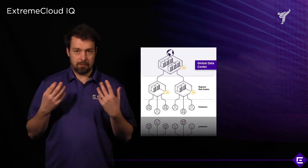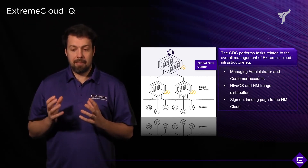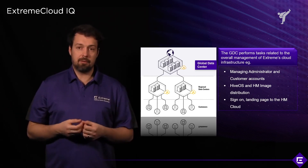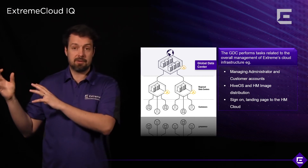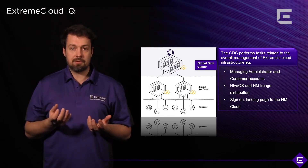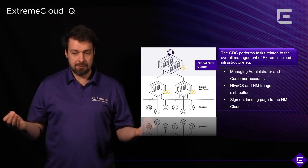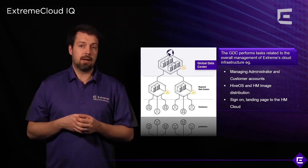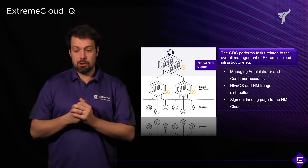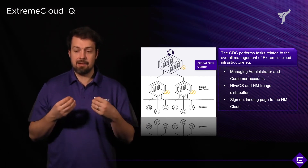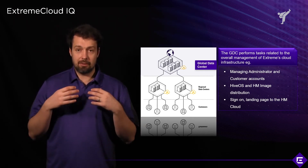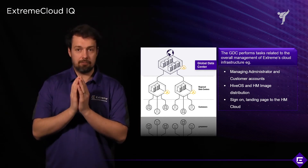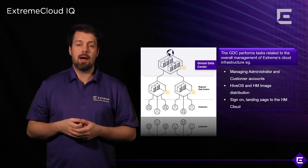So what's the role of the Global Data Center? It performs tasks related to the overall management of the Xtreme Cloud IQ infrastructure. It allows you to create and register your account and maps you to the closest RDC or point of presence. It supports managing administrator and customer accounts, implementing RBAC role-based access control. It is also used to distribute firmware upgrades, and serves as a landing and sign-in page for customers and partners, redirecting you automatically to where your data is stored.